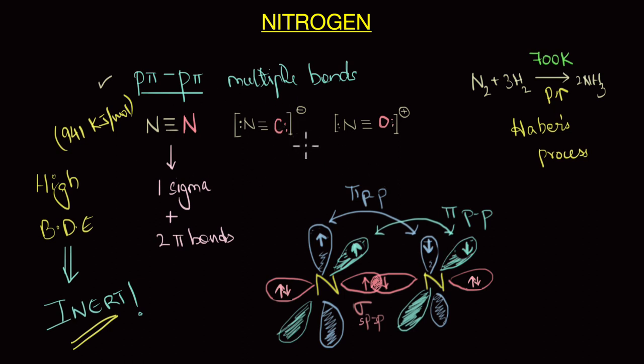Now, the interesting thing to note here is that even though all of them have triple bonds, it is only nitrogen that is inert at room temperature, whereas CN- and NO+ are more reactive than nitrogen. And this is because their bonds are more polar. CN- and NO+ are more polar due to the electronegativity difference between nitrogen and carbon and nitrogen and oxygen.